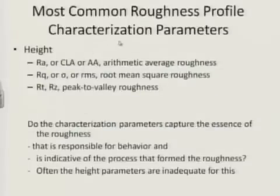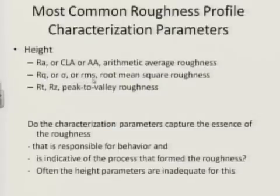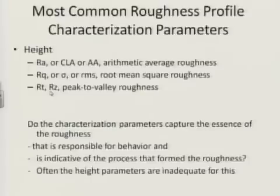The most common characterizations for roughness profiles are the height parameters. The most widely used is the average roughness, Ra, also referred to as CLA for centerline average, or AA for arithmetic average. Quite commonly we also see RQ or sigma, sometimes called RMS, which is really a measure of the standard deviation of the roughness — the root mean square roughness. Additionally, quite commonly we see different measures of peak-to-valley roughness: RT, which is the peak-to-valley for the entire profile, or RZ, which is an average over different sampling intervals or segments of the profile.